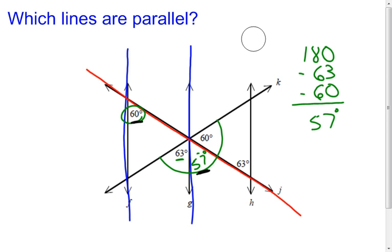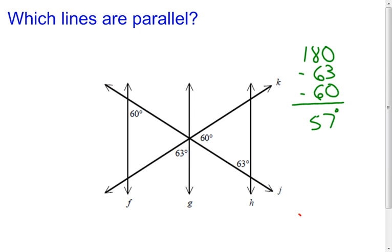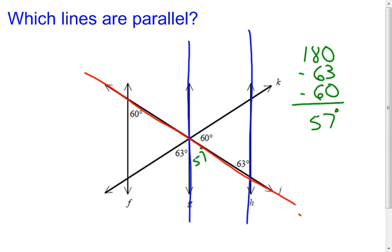Starting over, I'll now look at line g and line h to see if they're parallel. I'll keep the 57-degree angle since it may be helpful. I need to pick the best transversal — line k won't work because I don't know those angles, so I'll stay with line j. Using the alternate interior angles at g and h, I can see they're not congruent, so line g and line h are not parallel.